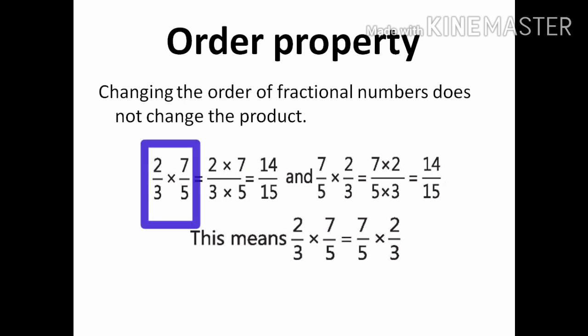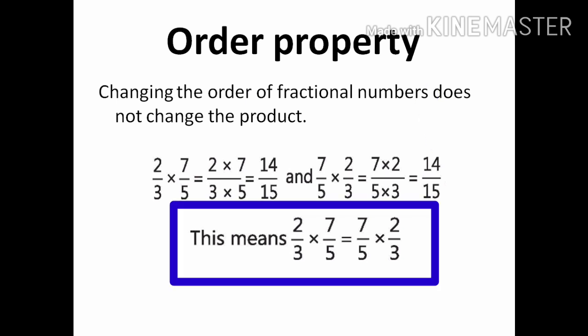For example, 2 upon 3 multiplied by 7 upon 5 is equal to 14 upon 15, and 7 upon 5 multiplied by 2 upon 3 is equal to 14 upon 15. This means 2 upon 3 multiplied by 7 upon 5 is equal to 7 upon 5 multiplied by 2 upon 3.